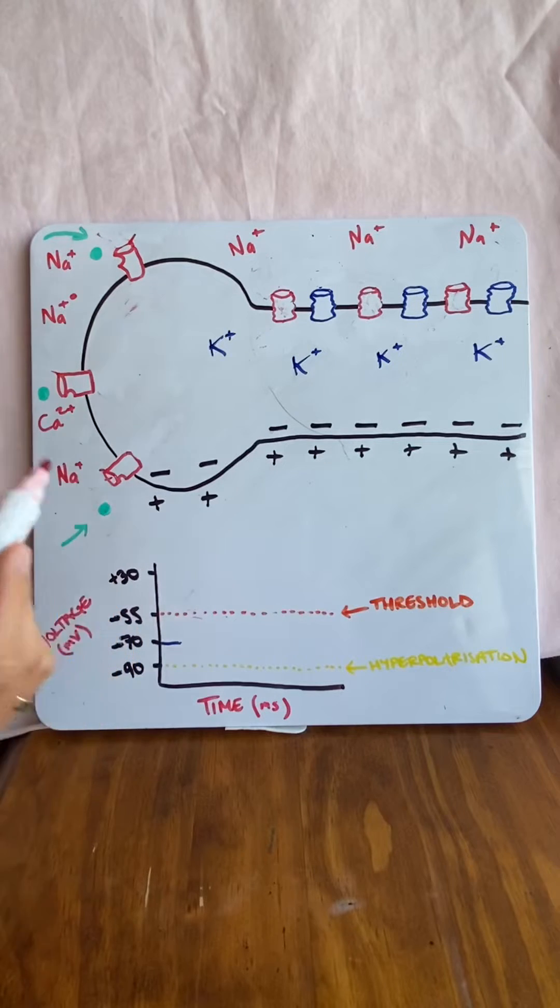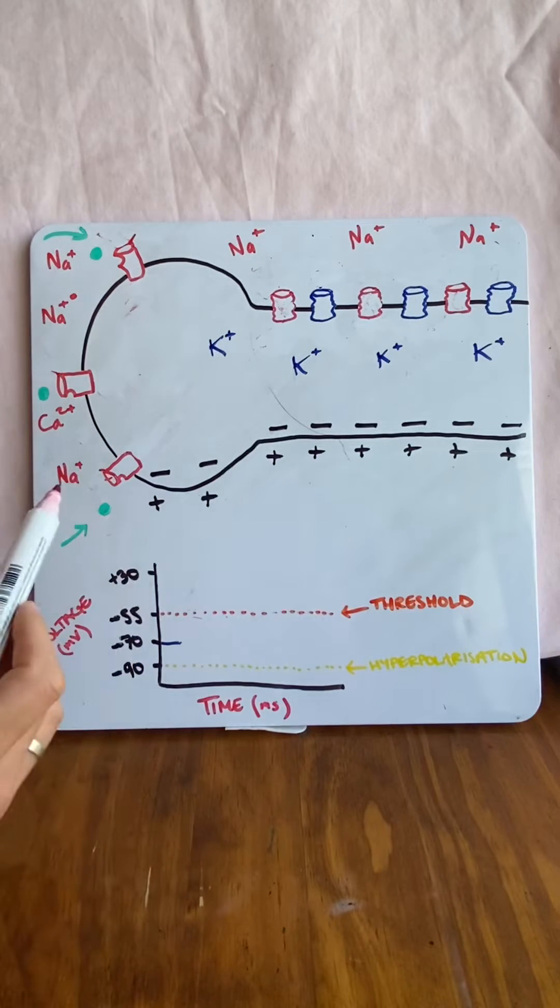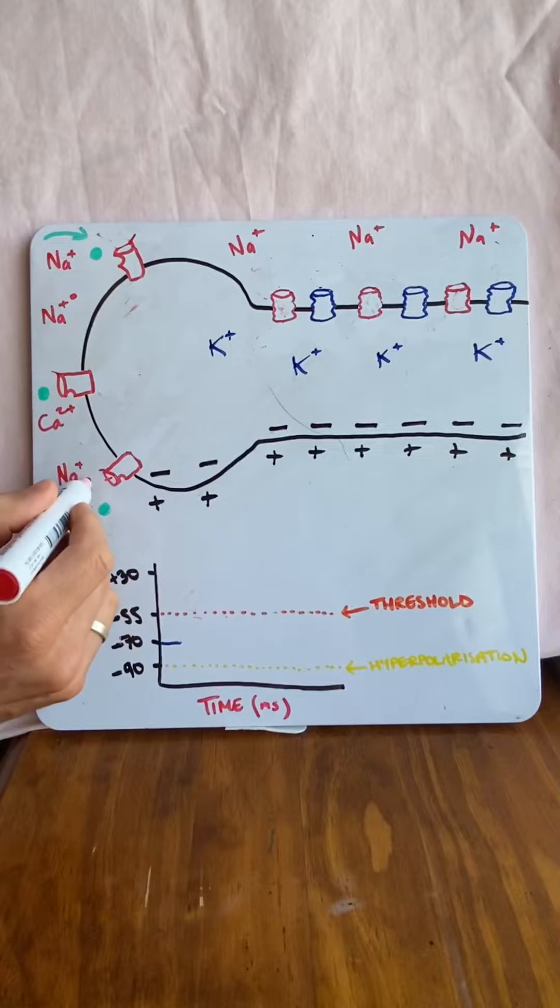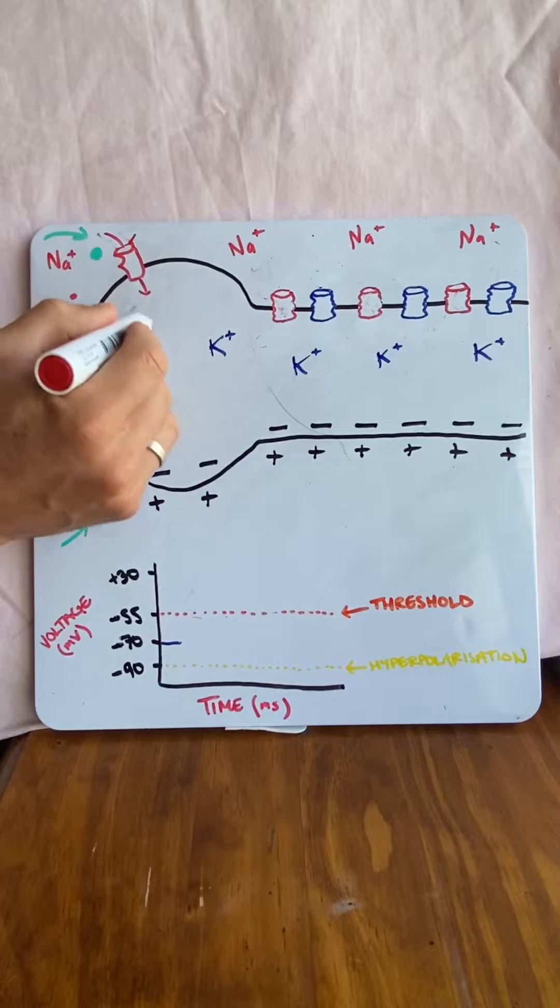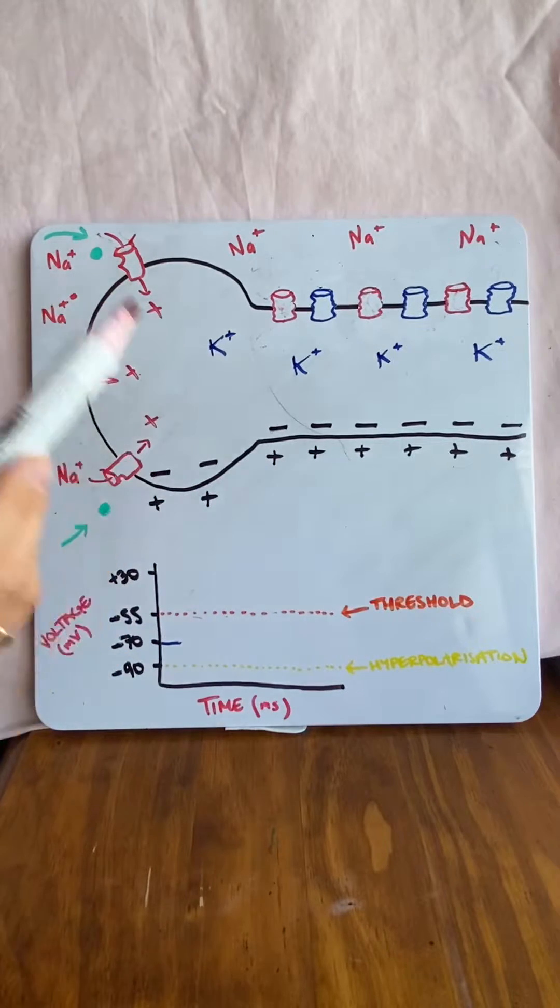And these channels allow for positive ions to move in. Ions like sodium and calcium. Now, if these positive ions move in, they're carrying that positive charge inside with it. And if it carries that positive charge inside, it moves from negative 70 millivolts to something more positive.